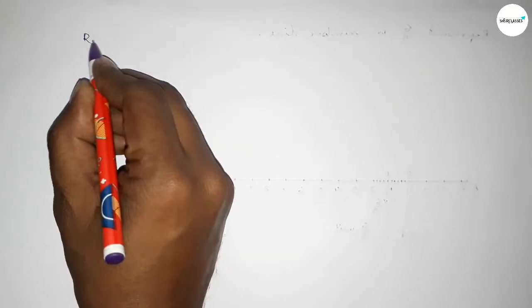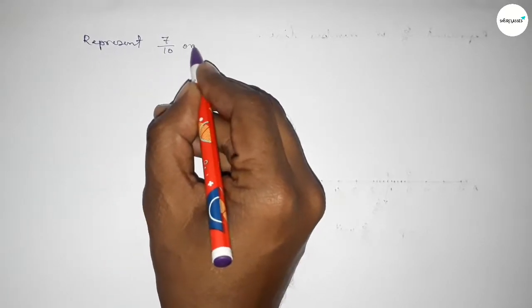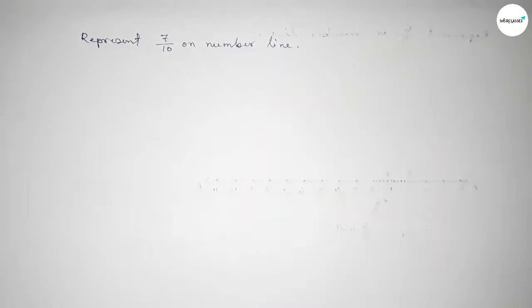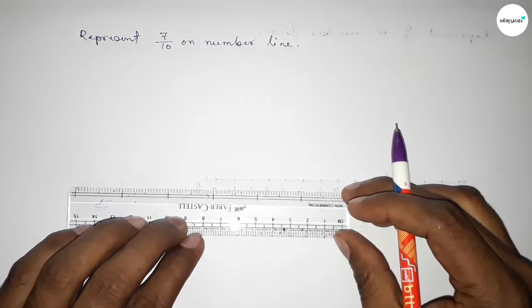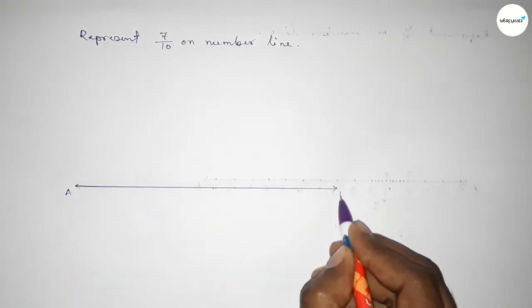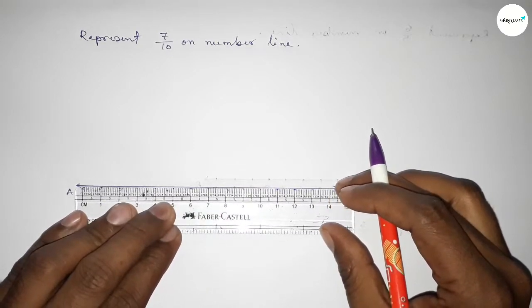Hi everyone, welcome to SI Share Classes. Today in this video we have to represent 7 over 10 on a number line. So let's start the video. First of all, we have to draw here the number line, so first drawing here a line of any length and taking arrow marks on both sides, and this is a B line.